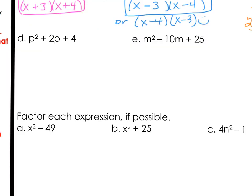Let's try this second row. Now example D: p² + 2p + 4. Taking a look at each term, notice our a value is 1, so we're good to go there. Our constant is positive 4. Now the nice thing about this one, we don't have a lot of choices. We could do 1 times 4 or 2 times 2.